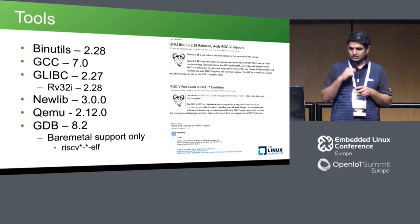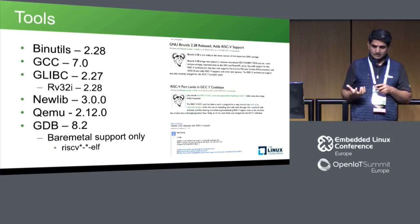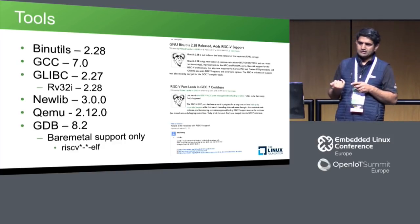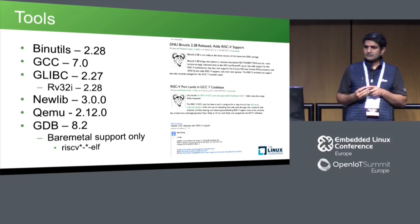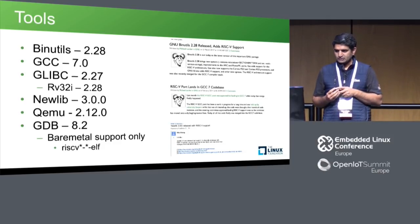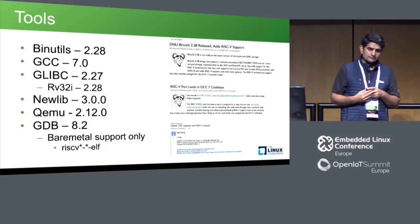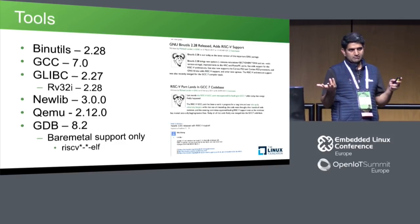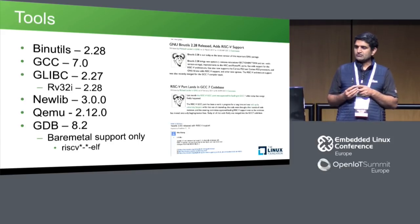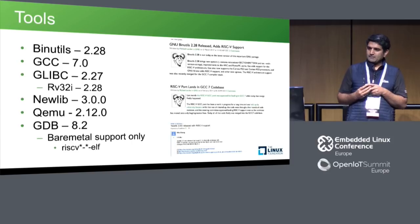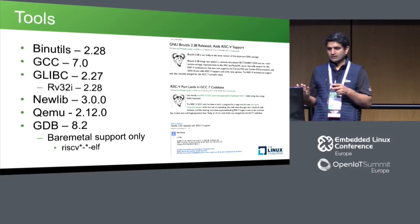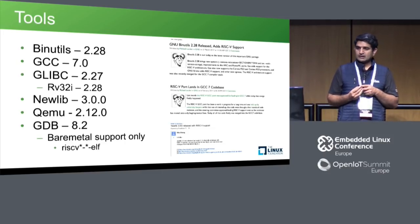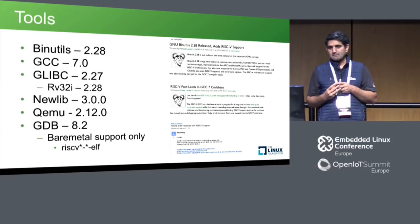GCC 7.0 onwards has RISC-V support. Glibc 2.27, earlier this year, got the 64-bit port, and 2.28 will have the RV32 port. Newlib 3.0, also released earlier this year, has RISC-V support — it's the C library you use for bootstrapping toolchains for bare metal. QEMU is very important when you don't have real hardware, and version 2.12 got full support for the RISC-V VIRT emulator upstream.